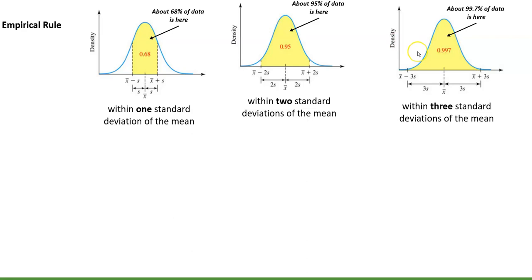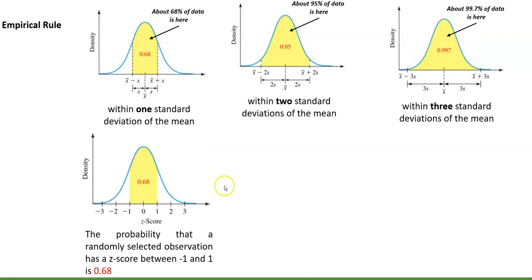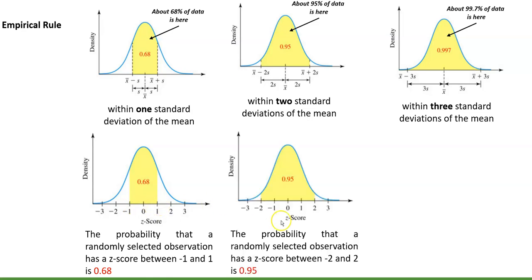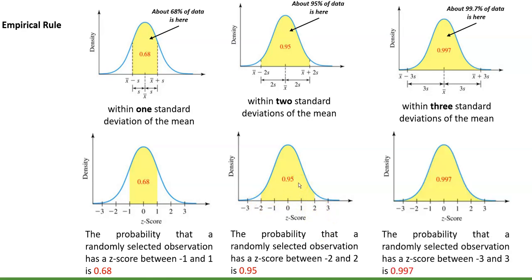We can also describe the empirical rule in terms of z-scores and probabilities. A z-score represents the number of standard deviations a value is above or below the mean, so one standard deviation below the mean corresponds to a z-score of negative one. Reinterpreting proportions as probabilities: the probability that a randomly selected observation has a z-score between −1 and 1 is 0.68; between −2 and 2 is 0.95; and between −3 and 3 is 0.997.